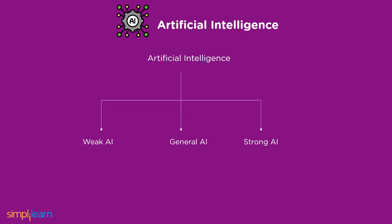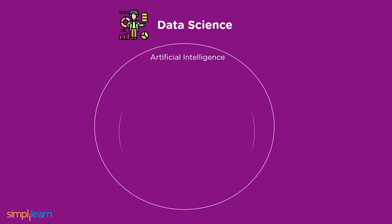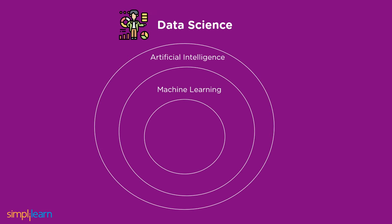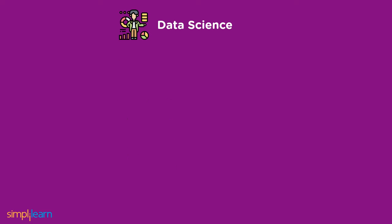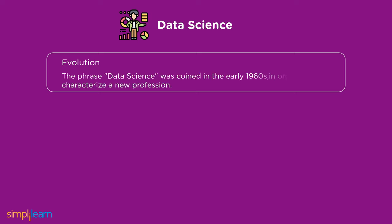Now that we have covered deep learning, machine learning, and artificial intelligence, the final topic is data science. Concepts like deep learning, machine learning, and artificial intelligence can be considered a subset of data science. The phrase data science was coined in the early 1960s to characterize a new profession that would enable the comprehension and analysis of the massive volumes of data being gathered at the time.